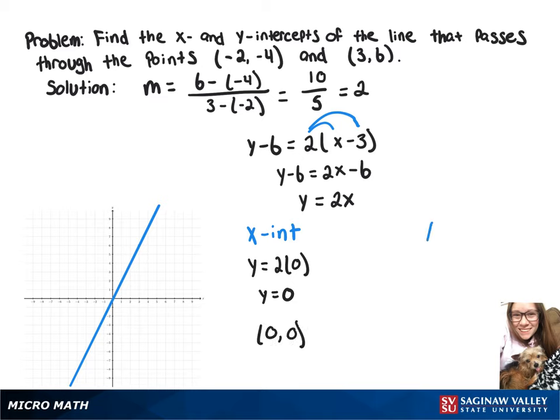So similarly, that's what we're going to get for our y-intercept, but just to check, we'll sub in 0 for y. And that gives us 0 equals 2x. And then when you divide both sides by 2, you get x equals 0. So again, your intercept is 0, 0.